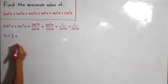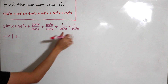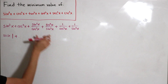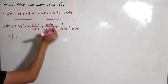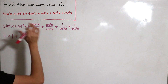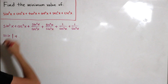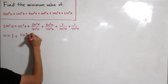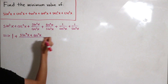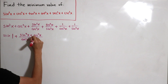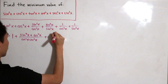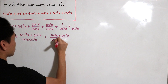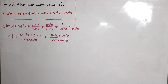We know from the Pythagorean identity that sine squared of x plus cosine squared of x equals one. Now, let's get a common denominator for the remaining terms. Using the butterfly method for the tangent and cotangent terms, the numerator becomes sine to the fourth of x plus cosine to the fourth of x, with denominator cosine squared of x times sine squared of x. For the secant and cosecant terms, the numerator is sine squared of x plus cosine squared of x, over the same denominator.